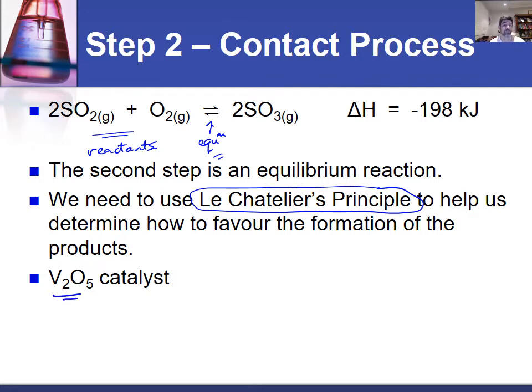This process is called the contact process because it involves bringing the reactants into contact with a catalyst. And the catalyst could be platinum or a vanadium oxide, in this case I've put there. The reason the catalyst is there is to increase the rate of reaction.